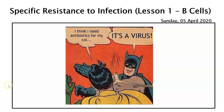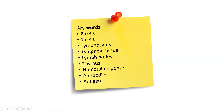Hi everyone. In this video we're going to be looking at the first part of specific resistance to infection, specifically looking at B lymphocytes or B cells. In this lesson, your key terminology includes B cells or B lymphocytes, and T lymphocytes which we will discuss in the next lesson. We'll also recap lymph, lymphoid tissue, lymph nodes, and associated structures including the thymus. We'll also look at the humoral or antibody mediated response, involving antigens and antibodies.